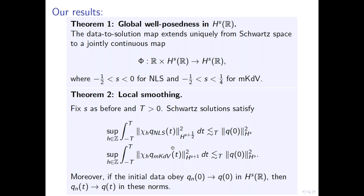The reason local smoothing is essential here is that for KdV, Molinet's ill-posedness threshold was H^{-1} for both the real line and the torus, so the same argument worked in both settings. For cubic NLS and mKdV, on the torus there is known failure of continuity of the data-to-solution map below L^2, whereas on the real line we want to go below L^2. To do so, we need a tool available on the real line but not on the torus — and that tool is the local smoothing estimate.